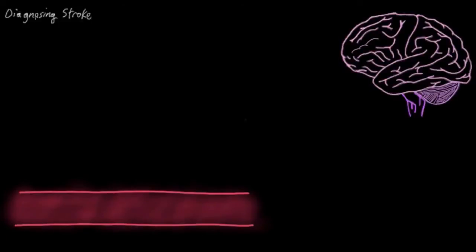There are three main steps in diagnosing strokes. Step one is to get a good history from the patient and to do a physical exam to check for neurological symptoms that the stroke might have caused.